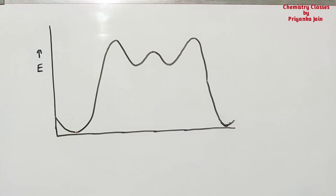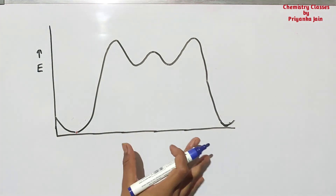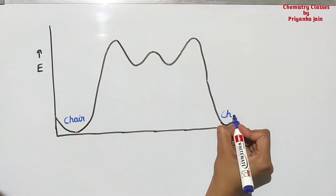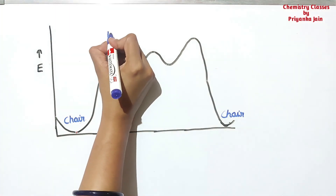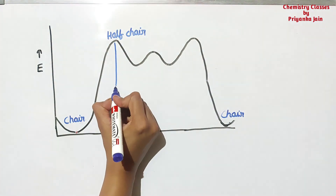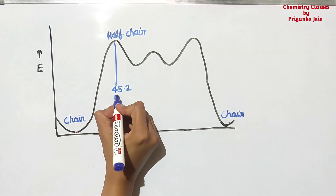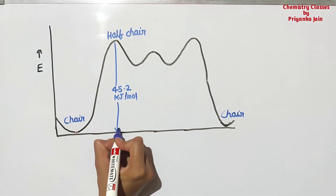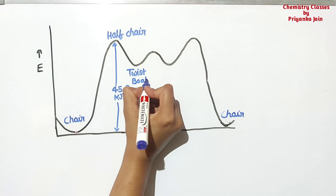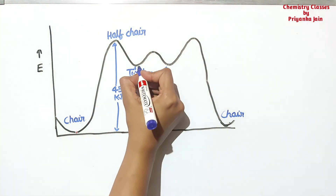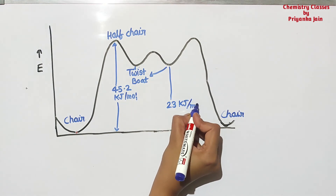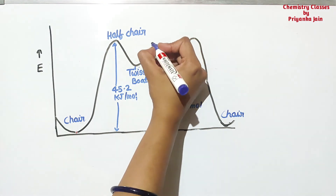Now we look at the energy level diagram for the different conformations of cyclohexane. The chair form is most stable and has the least energy. Converting to the half chair form gives the highest energy — there is an energy barrier of 45.2 kJ per mole. Then comes the twisted boat form, with energy equal to 23 kJ per mole. The boat form lies between these.